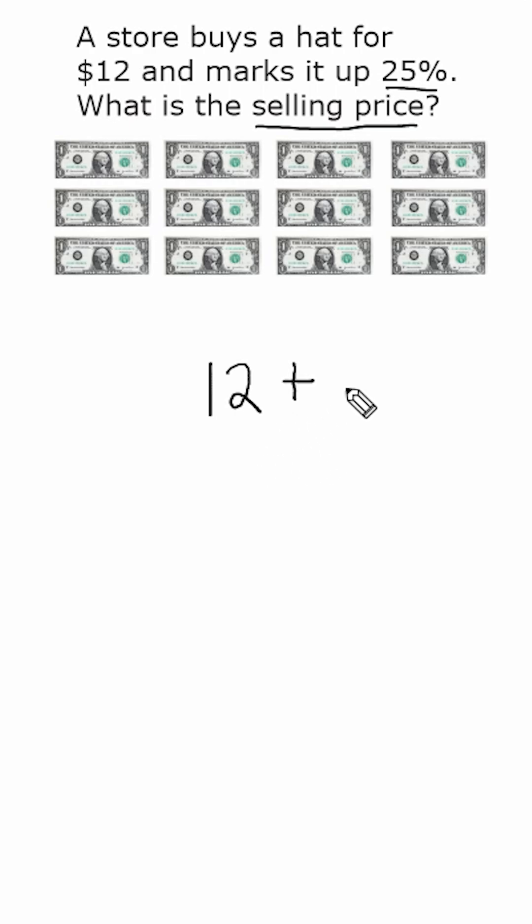Now the amount that we're going to add to 12 is going to be 25% of the original $12. 25% of anything is just one fourth of that thing. So I'm going to take one fourth of these $12 and shade in that quarter right there.